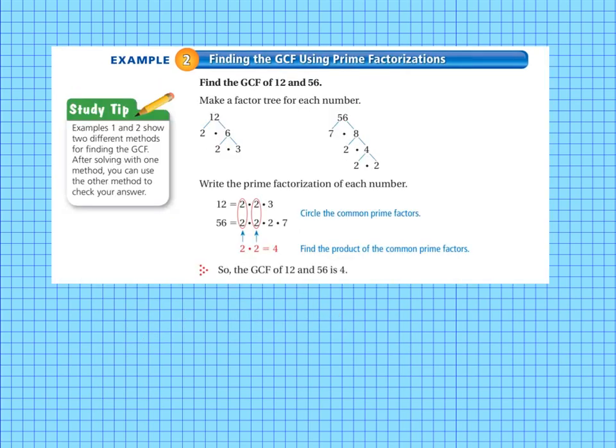Example 2 is finding the greatest common factor, GCF, using prime factorization. So let's look at this study tip. Examples 1 and 2 show two different methods for finding the greatest common factor. After solving with one method, you can use the other method to check your answer.